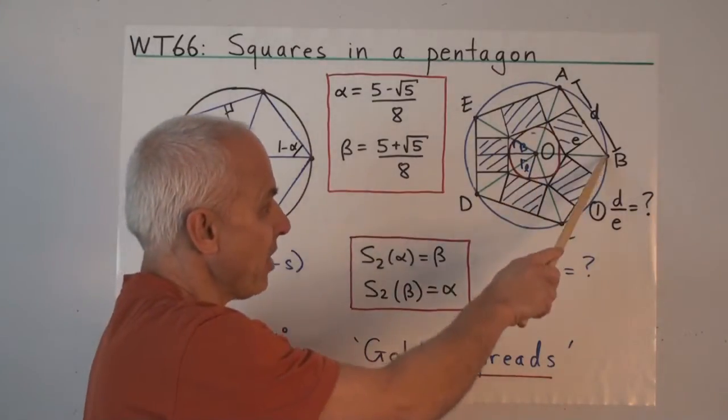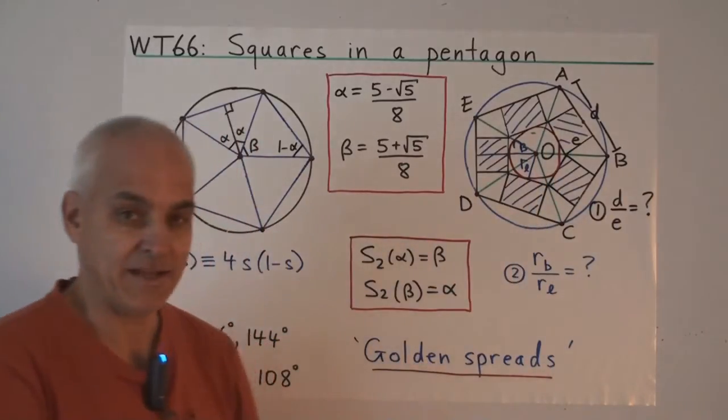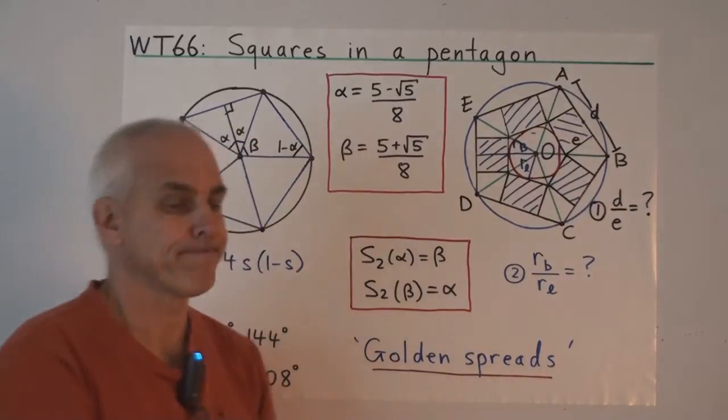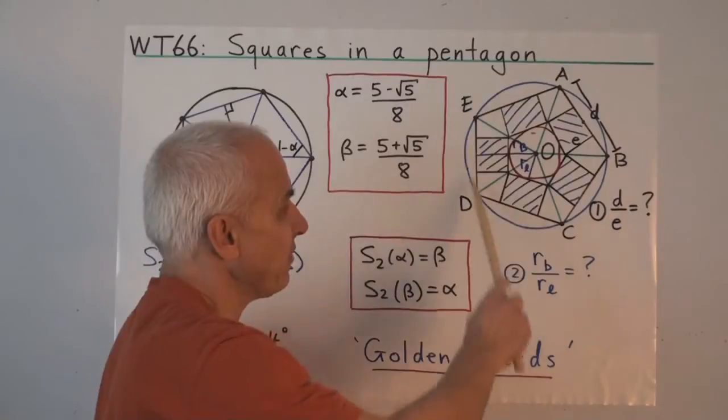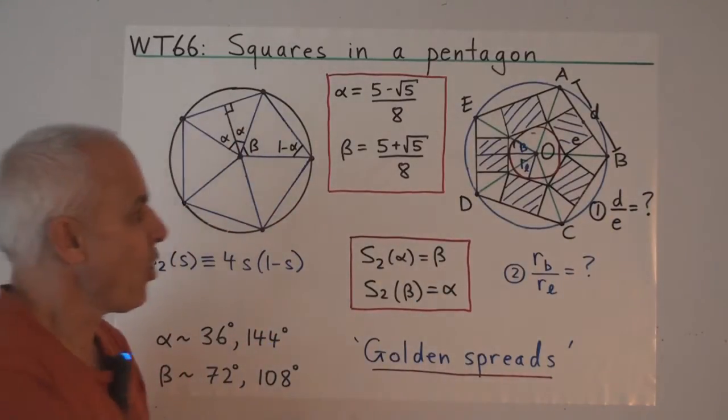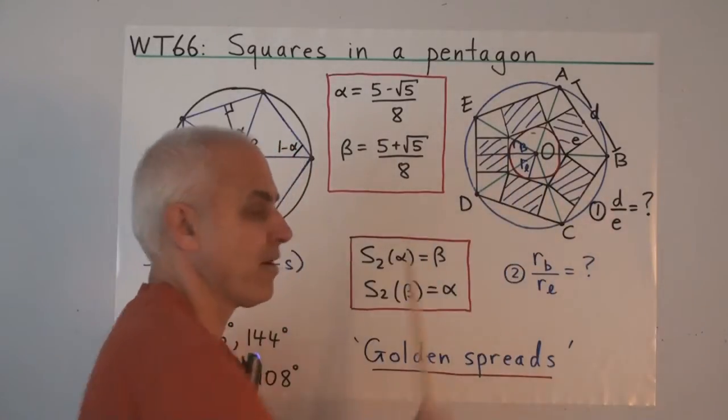So that determines the ratio of the side of the square to the side of the pentagon, and we're interested in that ratio. Let's say the side of the pentagon is D, the side of the square is E. We might ask, what is D over E? And the second question was, how do we compare the radius of the big circle going through the vertices of the pentagon with this smaller circle inscribed in the squares?